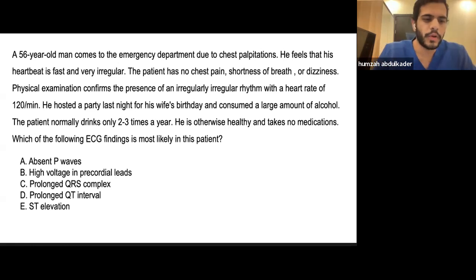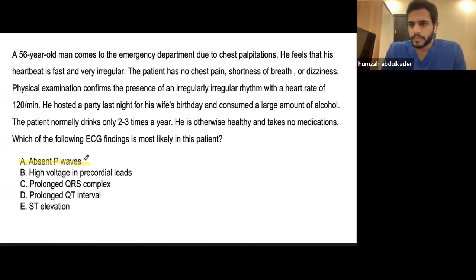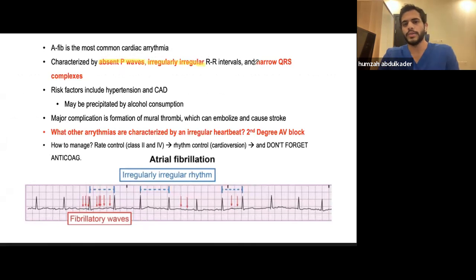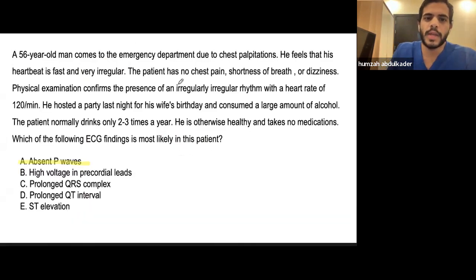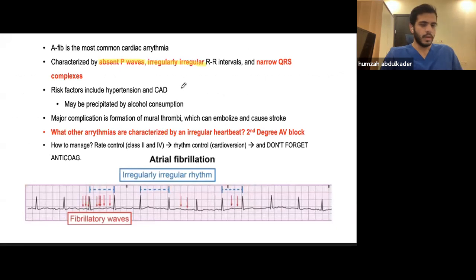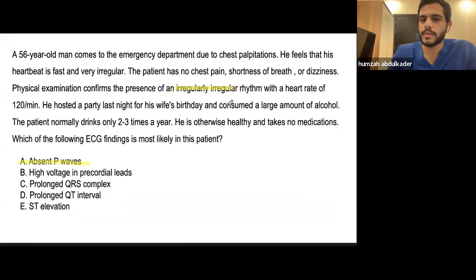The correct answer is A — absent P waves, which is indicative of atrial fibrillation. AFib is the most common cardiac arrhythmia. Its characteristics include absent P waves, irregularly irregular R intervals, and a narrow QRS complex. In the question, they mention specifically an irregularly irregular rhythm — that's pathognomonic for AFib. Risk factors include hypertension and CAD, but here it was precipitated by alcohol consumption at his wife's birthday party.